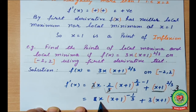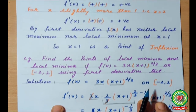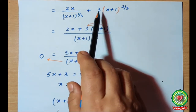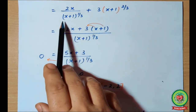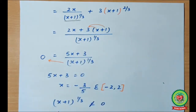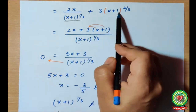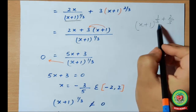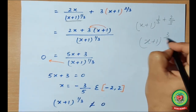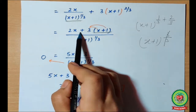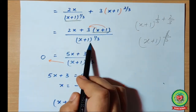So it equals 2x·(x+1)^(-1/3) + 3·(x+1)^(2/3). By taking the LCM as (x+1)^(1/3) and cross-multiplying, the power 1/3 + 2/3 = 1, giving (x+1)^1 = (x+1). So f'(x) simplifies to [2x + 3(x+1)] / (x+1)^(1/3), which equals (5x + 3) / (x+1)^(1/3).